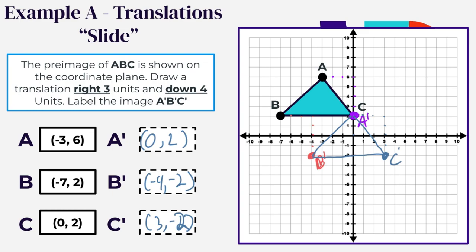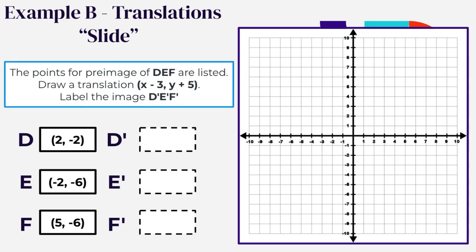Now let's look at example B. This time we're performing a translation again — a slide. The points from the pre-image of DEF are listed. Draw a translation of X minus 3, Y plus 5, and label the image D prime, E prime, F prime. Unlike last time, we don't have a picture to count from — we're just given the points.